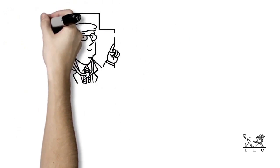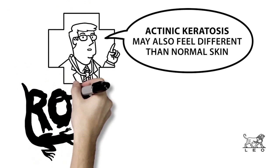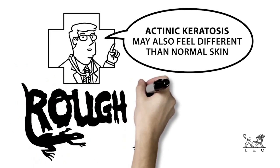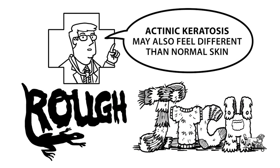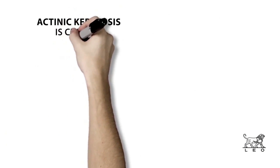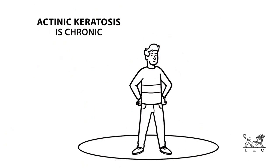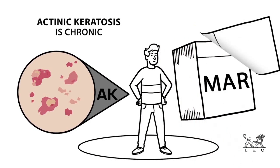Actinic keratosis may also feel different than normal skin with a rough or scaly texture like sandpaper and can itch and be tender. And since actinic keratosis is chronic, those previously diagnosed can expect to find more lesions over time.